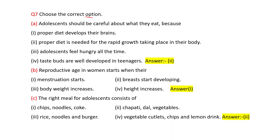Multiple choice question: Adolescents should be careful about what they eat because — options are: proper diet develops their brains; proper diet is needed for the rapid growth taking place in their body; adolescents feel hungry all the time; taste buds are well developed in teenagers. Correct answer is the second one: proper diet is needed for the rapid growth taking place in their body.